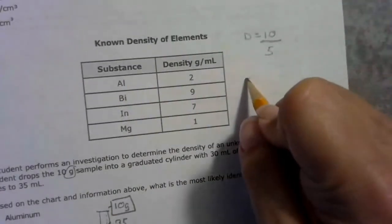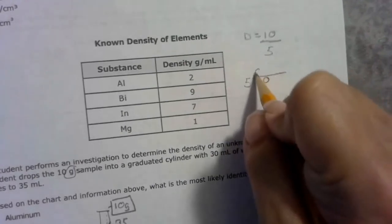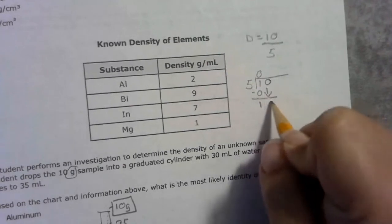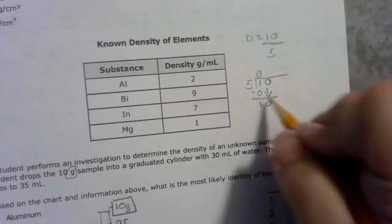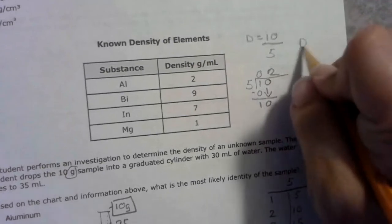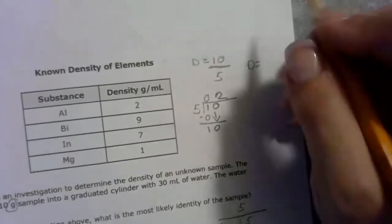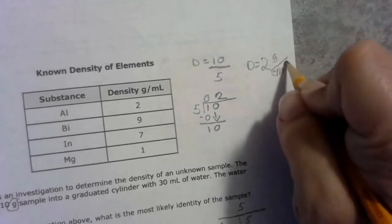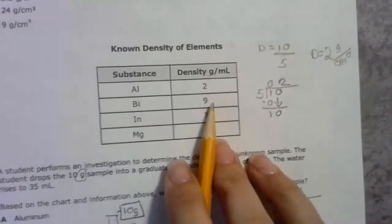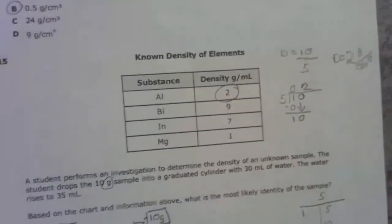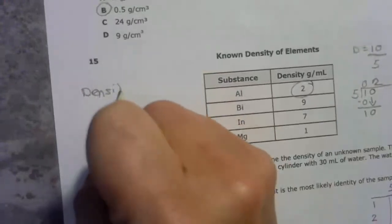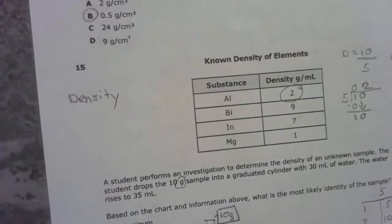I have my T-chart down here. Volume on the outside. 5 cannot go into 1. Bring down that 0, but 5 can go into 10 two times. So density is 2 grams per cubic centimeter. That's my aluminum. Remember that density is a physical property of matter. I can identify a piece of matter by its density.